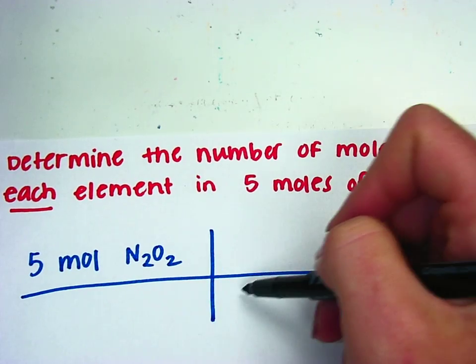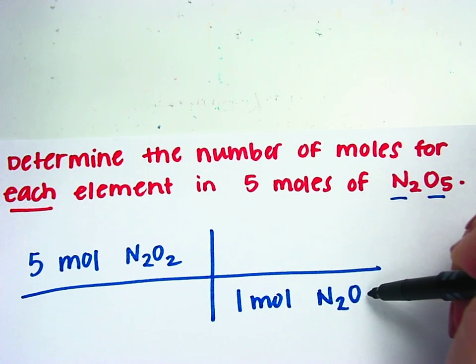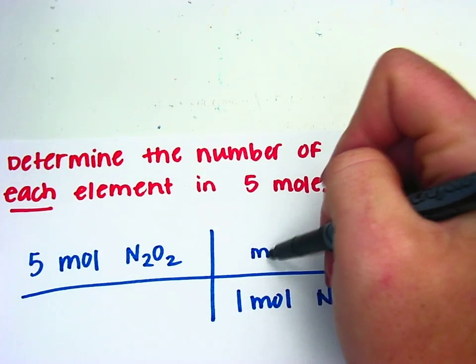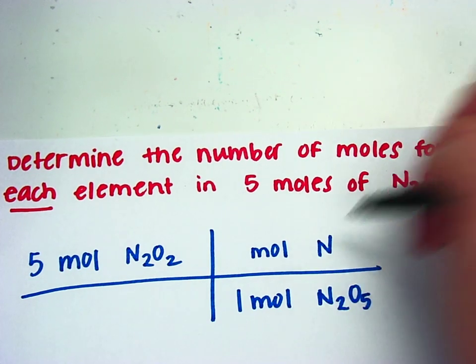You want that to go away, so you'll put 1 mole of N2O5 on the bottom. And then you're trying to get to moles of each element. So you'll have this work for all of the elements in the problem. The first element was nitrogen.